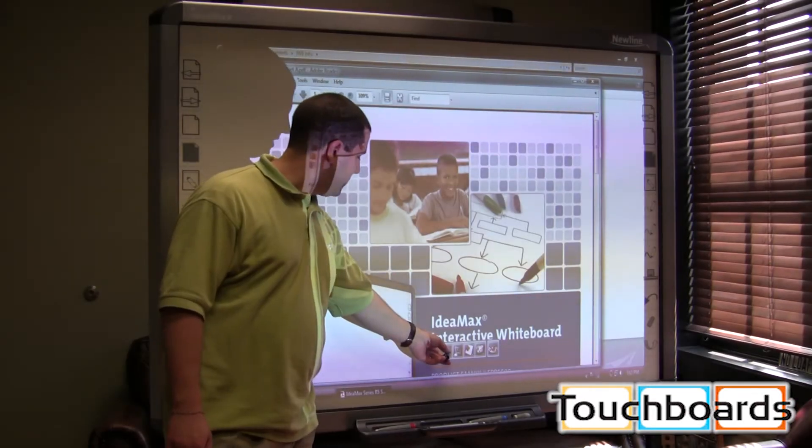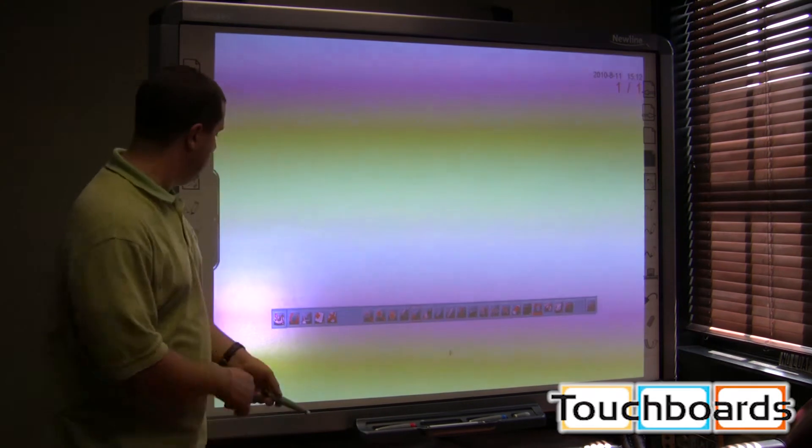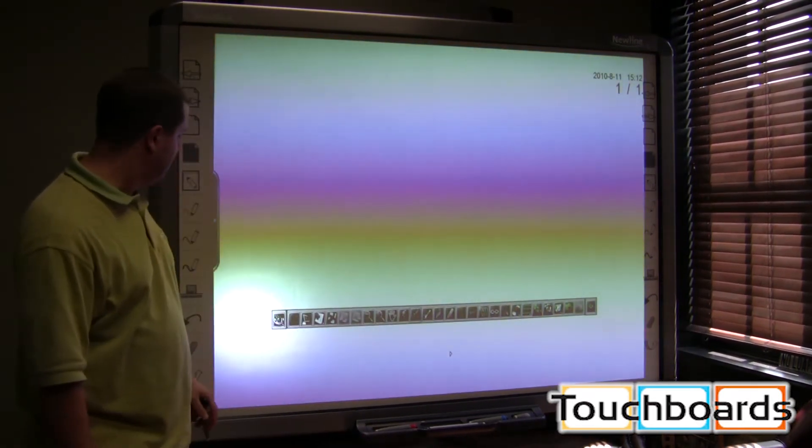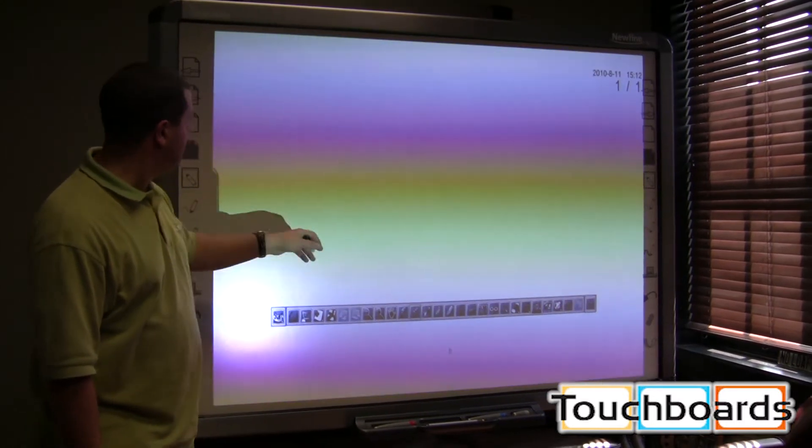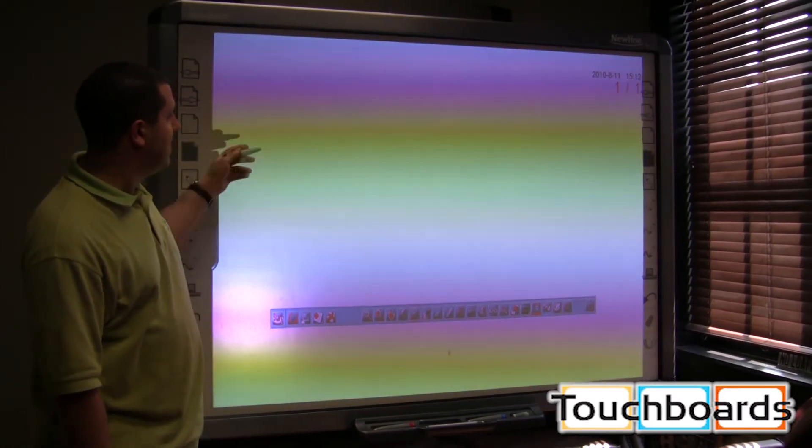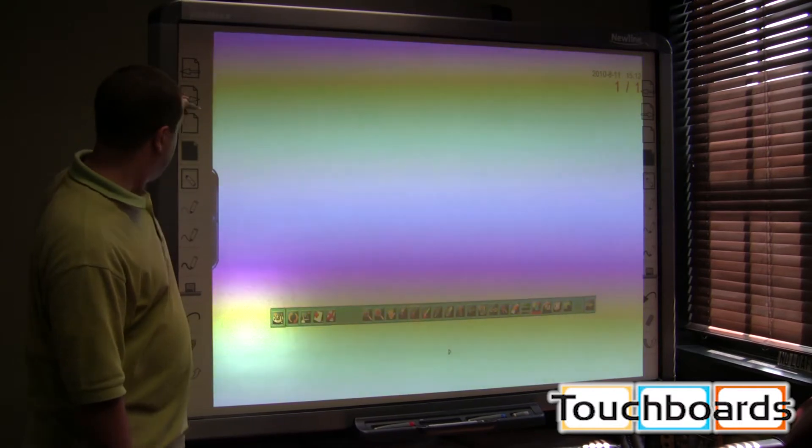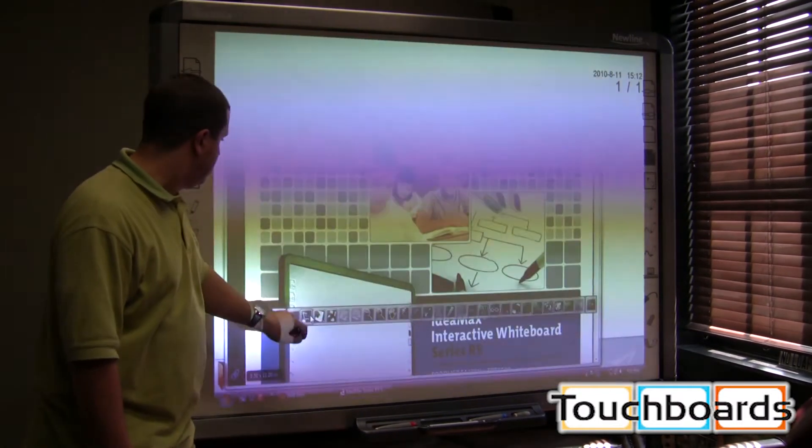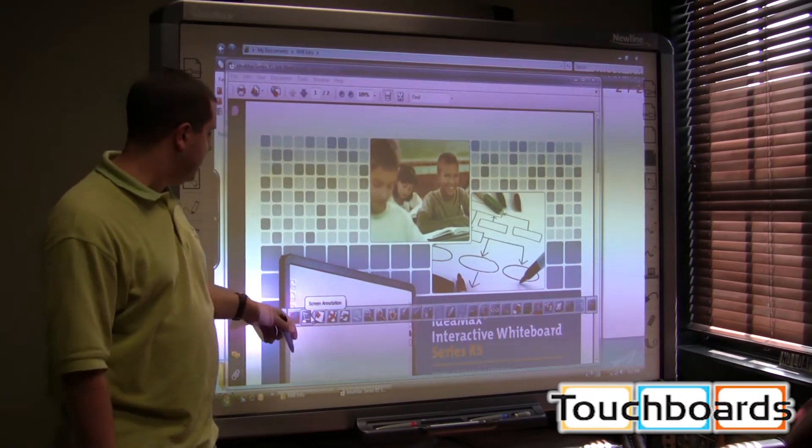I'm going to switch modes here, go to Presentation mode. As you can see now, we have a lot more icons that come up here. We've got screen annotation, which is now where we are. This is a blank white screen. And I'm actually going to go back a little bit to our live screen, which is the screen annotation mode.